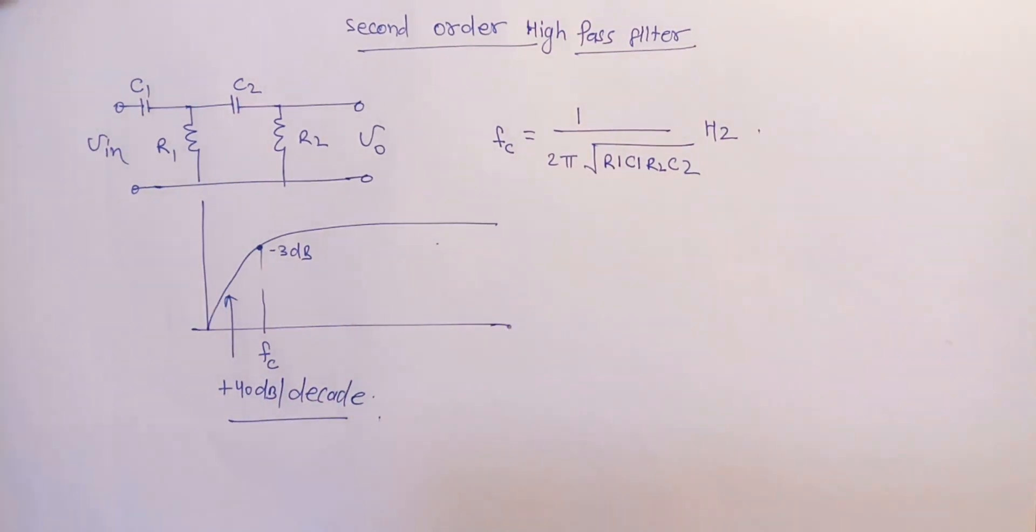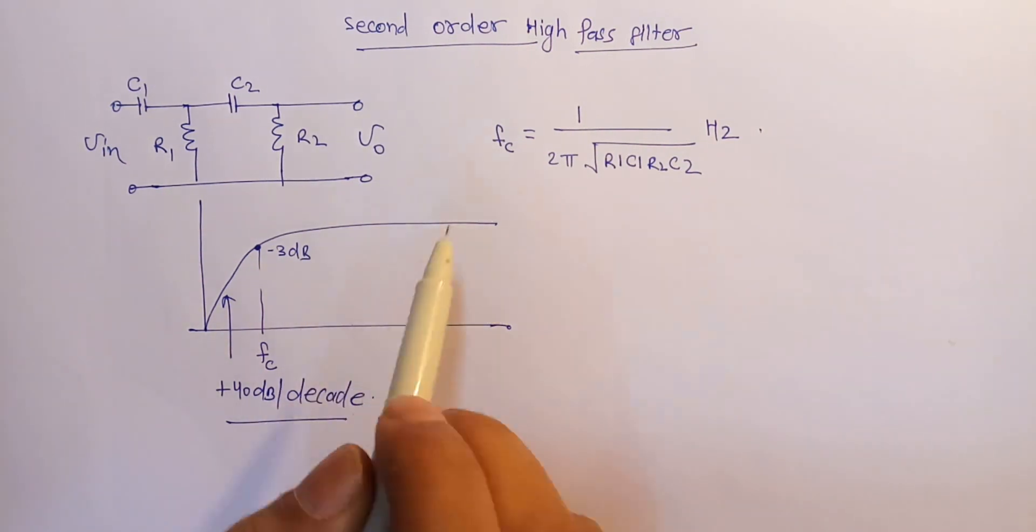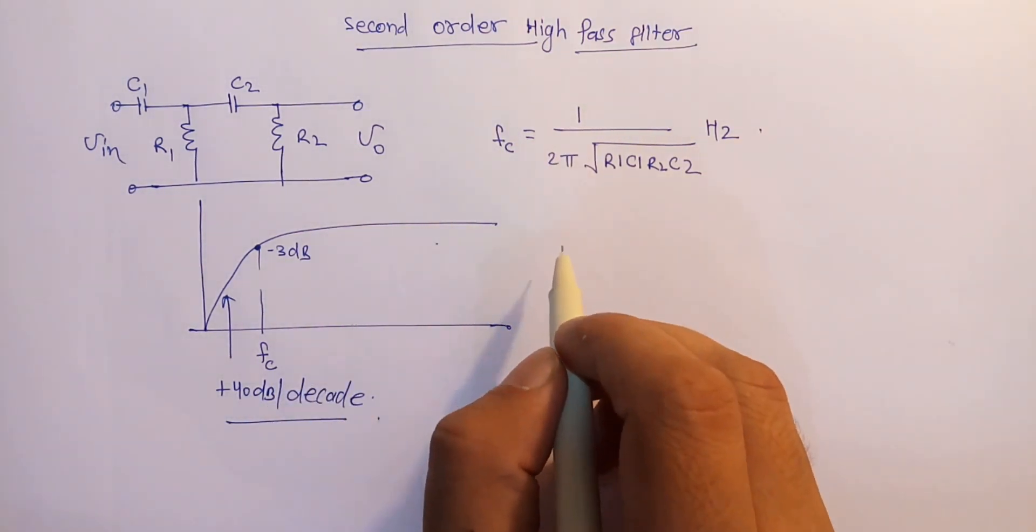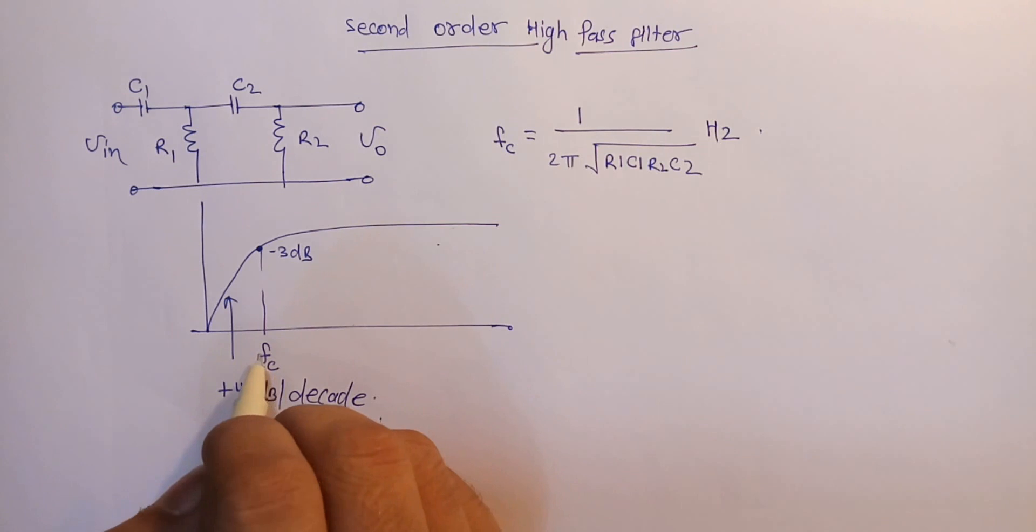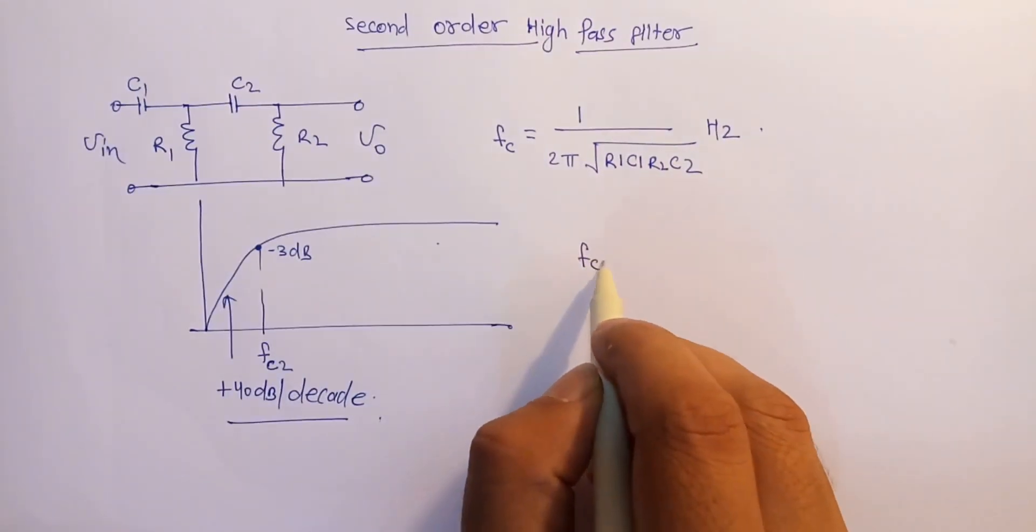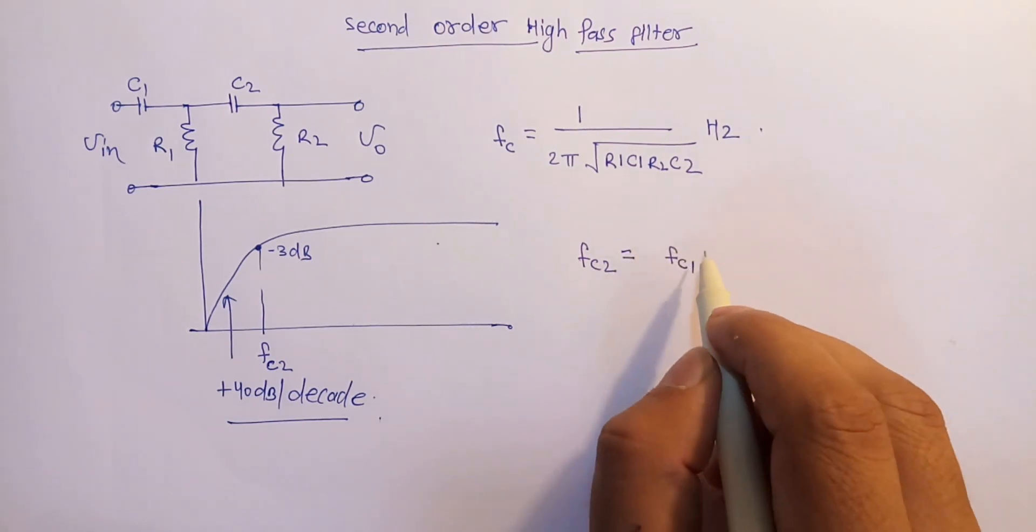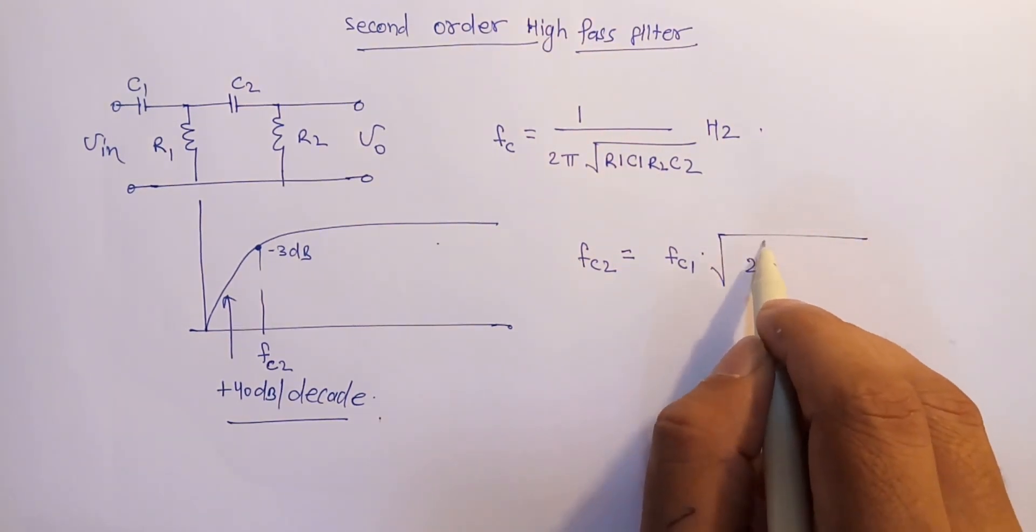decade. And this minus 3 dB will not be the same as the first order filter. As we have discussed in our previous tutorials, there is a relation between the second order cutoff frequency and the first order cutoff frequency. If we denote this FC as FC2 and the first order cutoff frequency as FC, then there will be a relation FC2 is equal to FC1 into under root 2 power 1